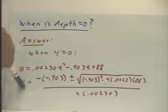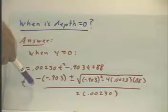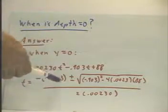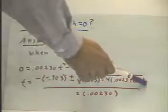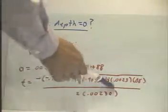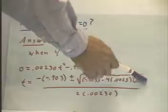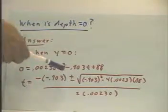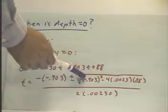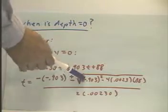This expression will give us a time when t equals zero if we have either a zero or a positive number under this radical. Remember that this thing under the radical is called the discriminant. If the discriminant is zero or positive, we're going to get at least one solution.